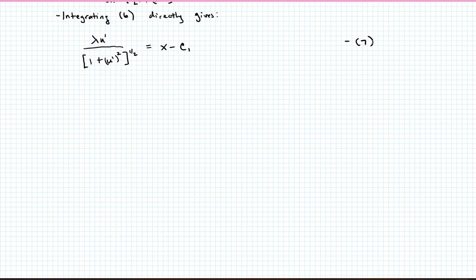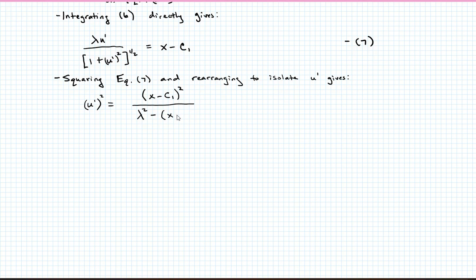So now I have the differential equation. Now I just need to develop a solution. So what I'm going to do in this case is I'm going to square equation 7, and I'm going to rearrange it to isolate u prime. And when I do that, I end up with u prime, the quantity squared, is going to be equal to, our numerator here is going to be x minus c1 squared divided by lambda squared minus x minus c1 squared. Let's call that equation 8.